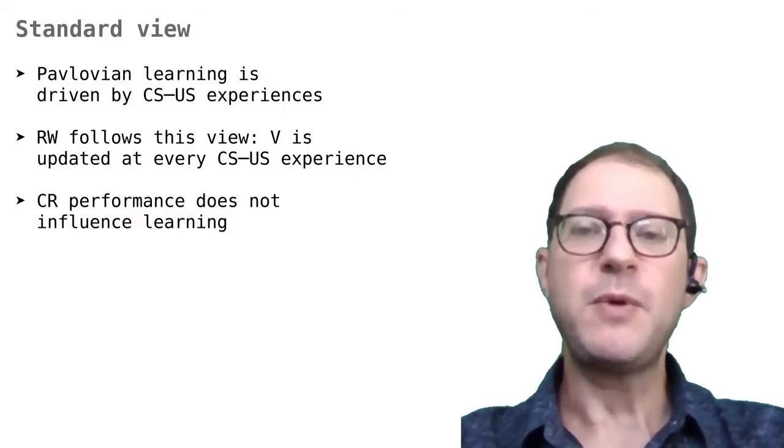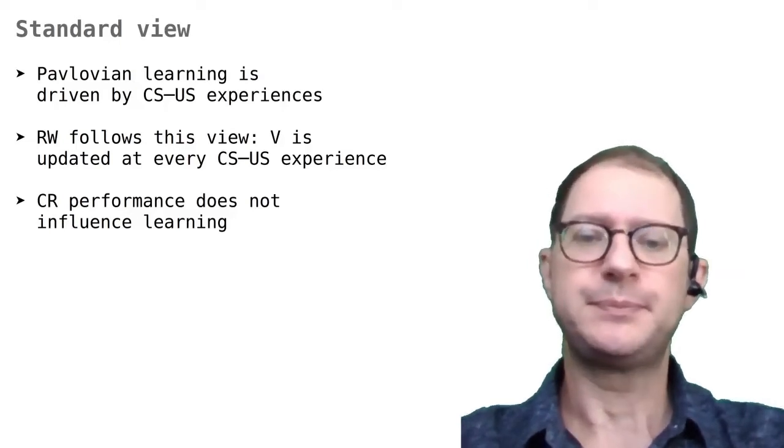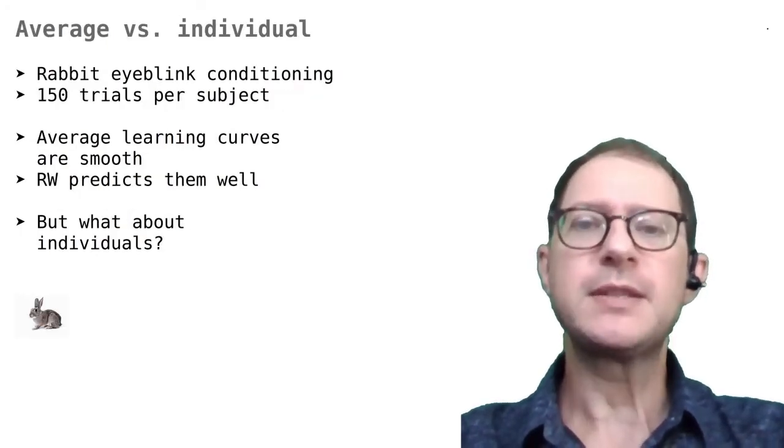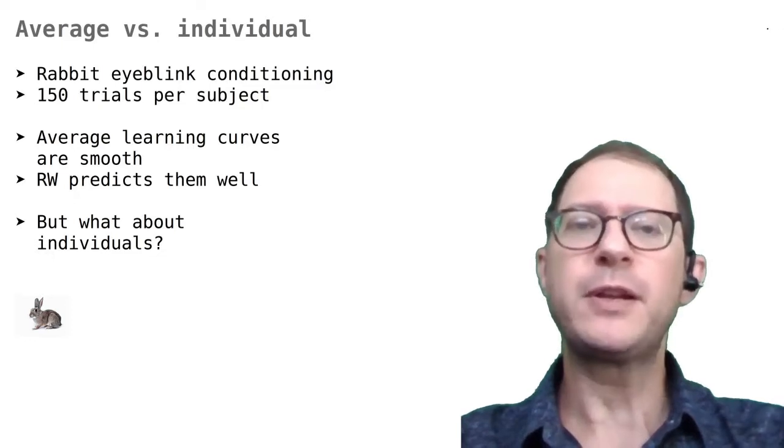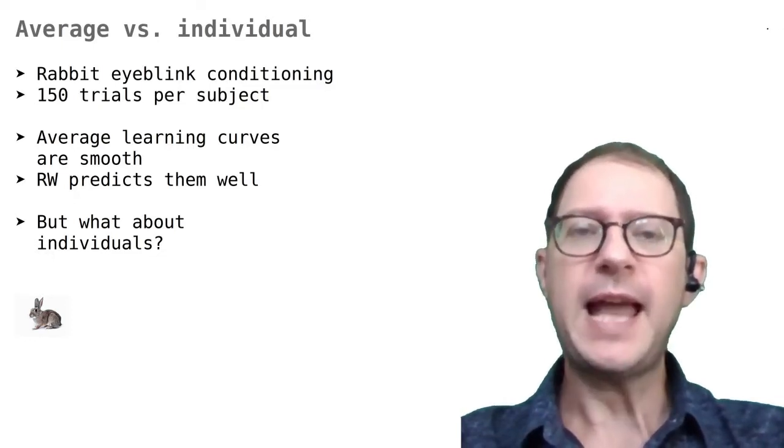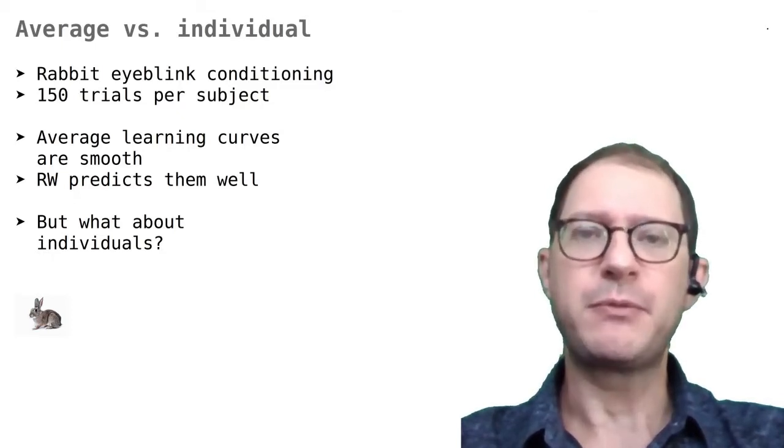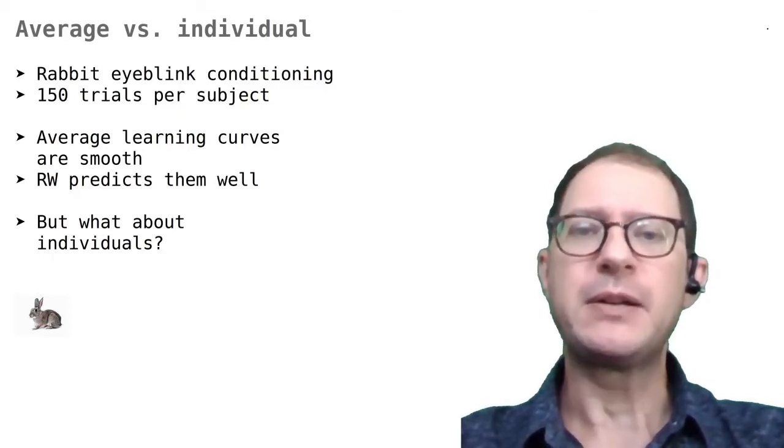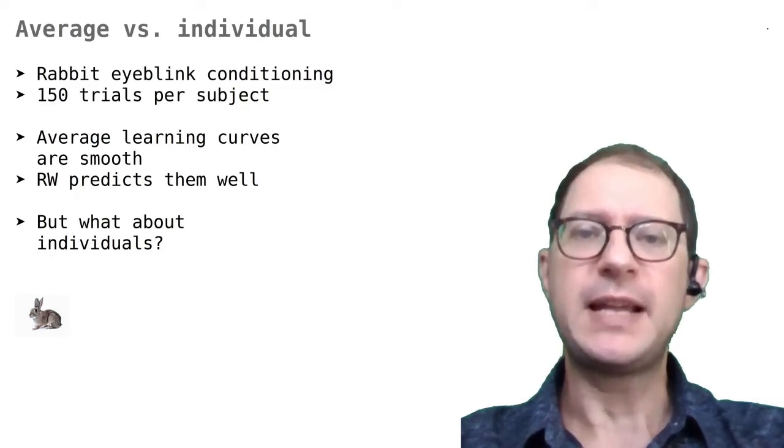Let's look at some data to see why this might not be the case. We saw in previous lessons that the Rescorla-Wagner model is a good match to Pavlovian learning curves. We look at an eye blink conditioning experiment with rabbits by Theos and Brelsford, but similar results can be found in other studies.